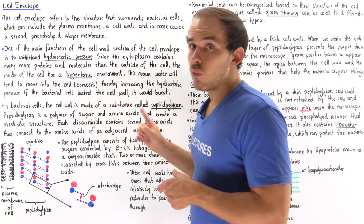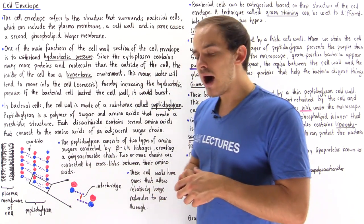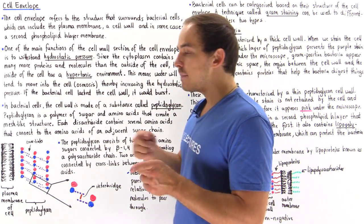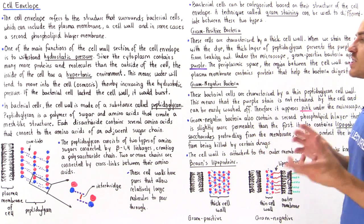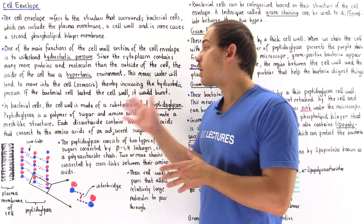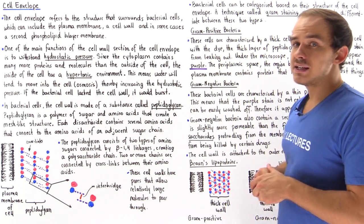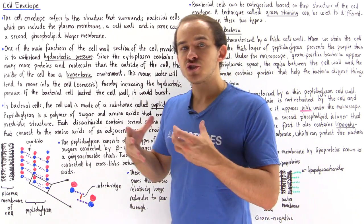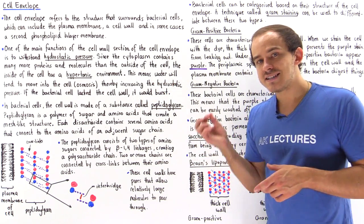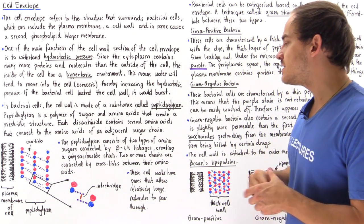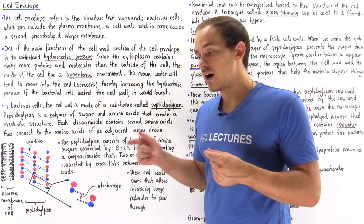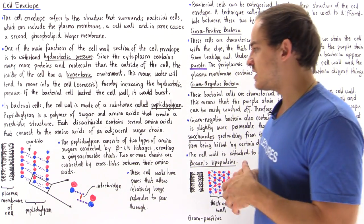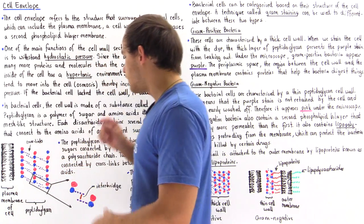In bacterial cells, the cell wall is made of a special molecule known as peptidoglycan. "Peptido" refers to peptide bonds and "glycan" refers to sugar molecules — and that's exactly what peptidoglycan is. It is a polymer of sugars and amino acids that creates a mesh-like structure. Each disaccharide within peptidoglycan contains several amino acids that connect to amino acids on adjacent sugar chains.